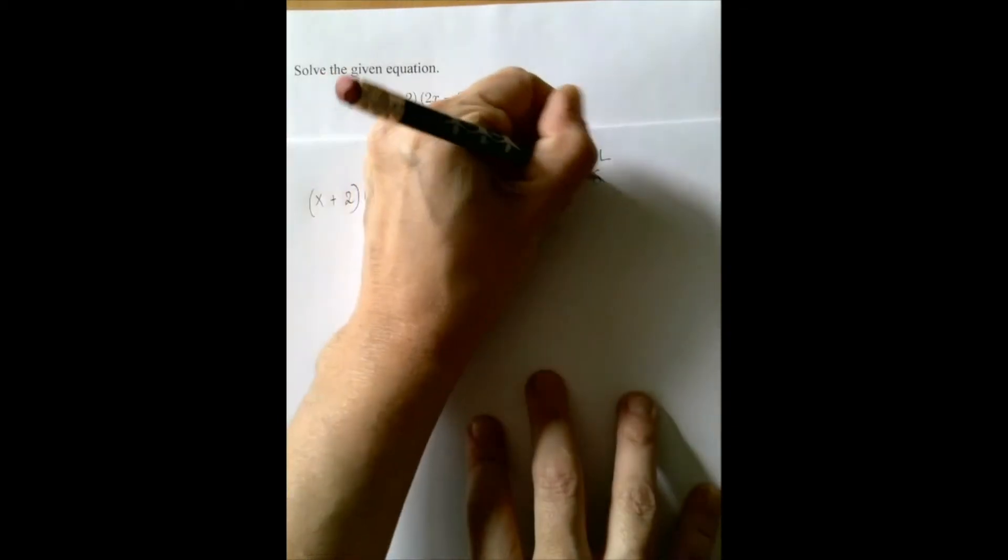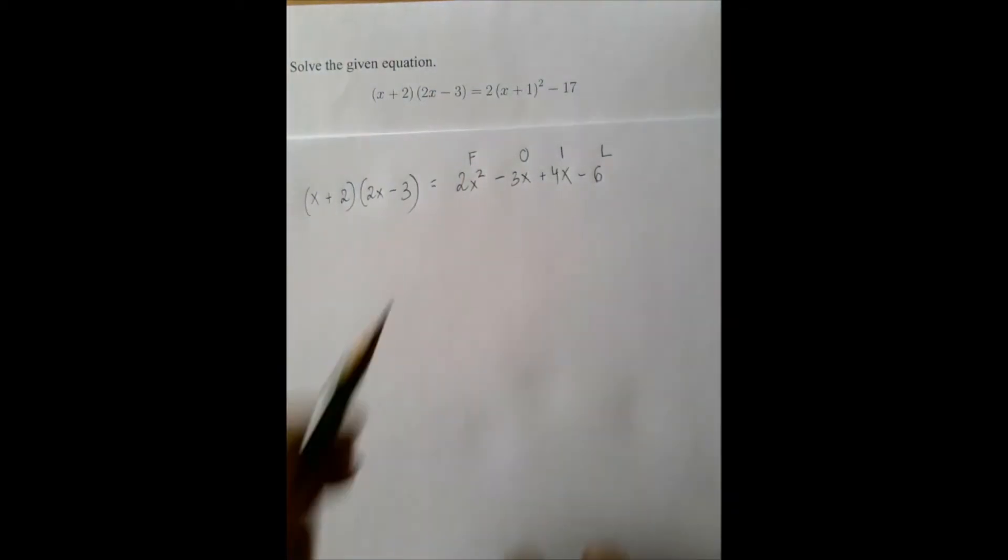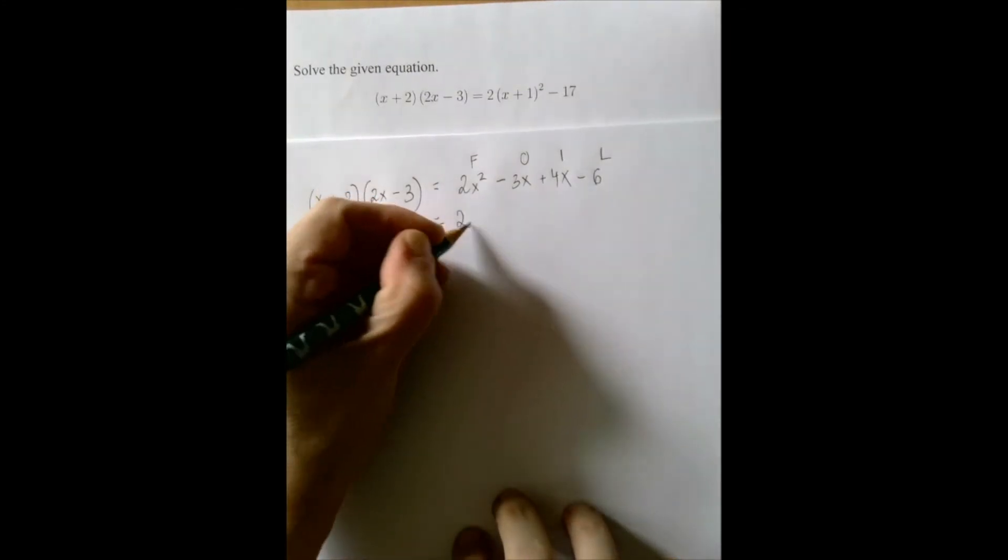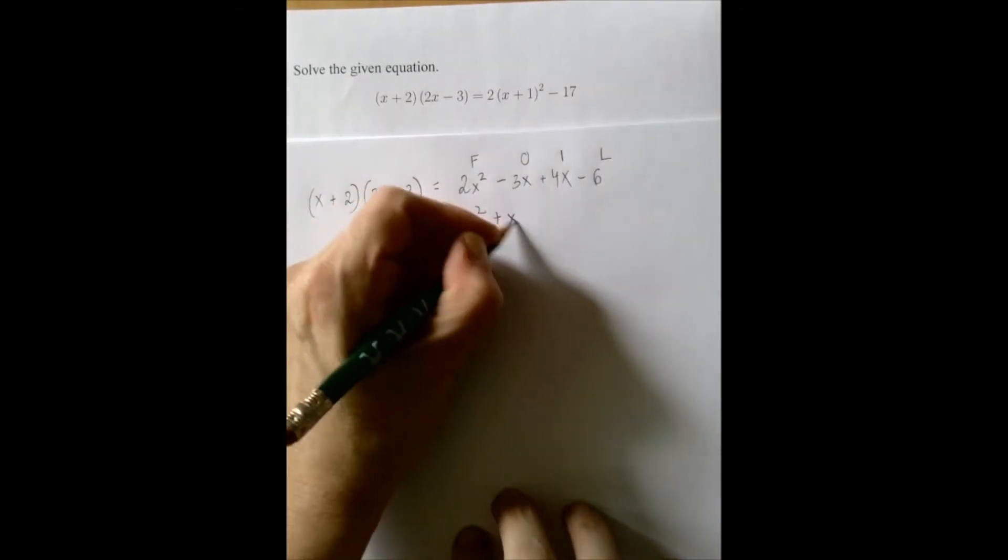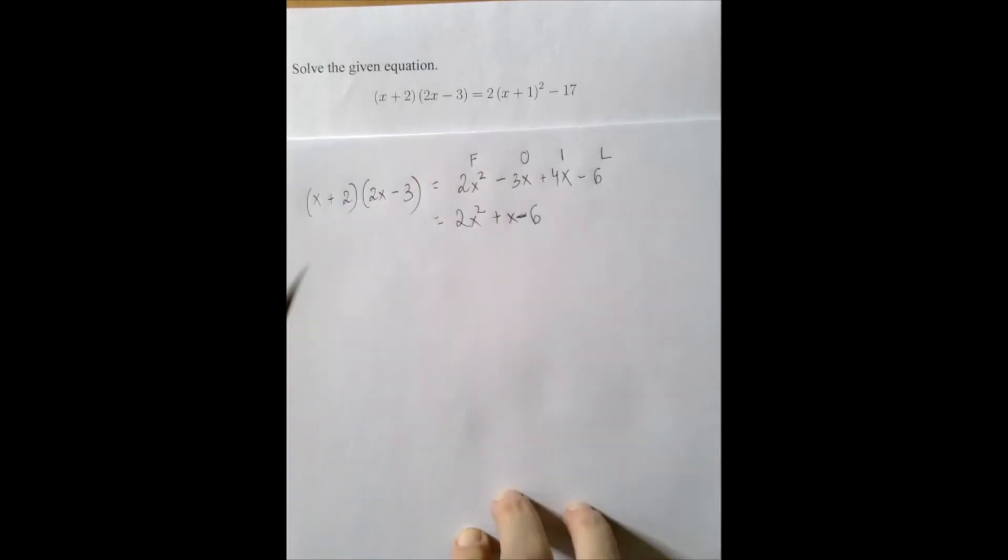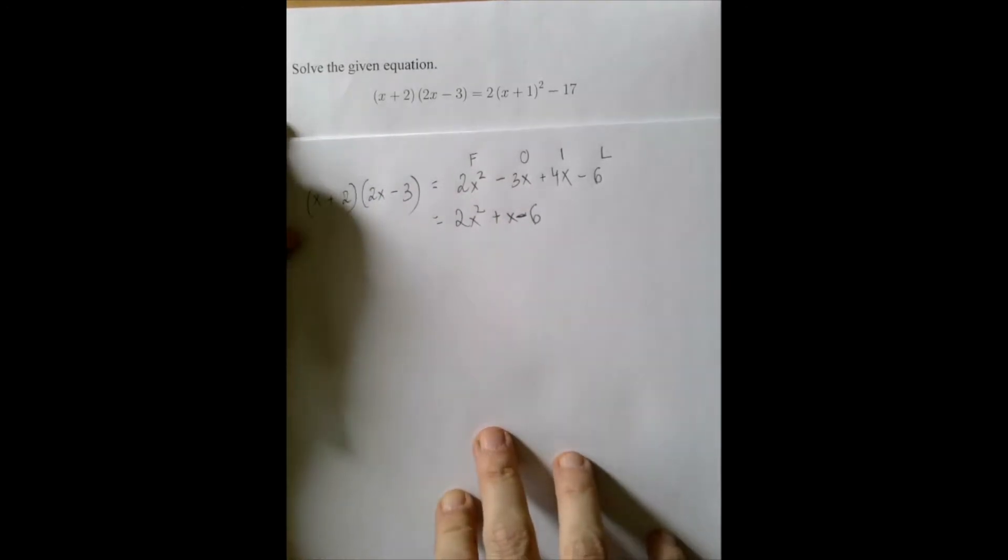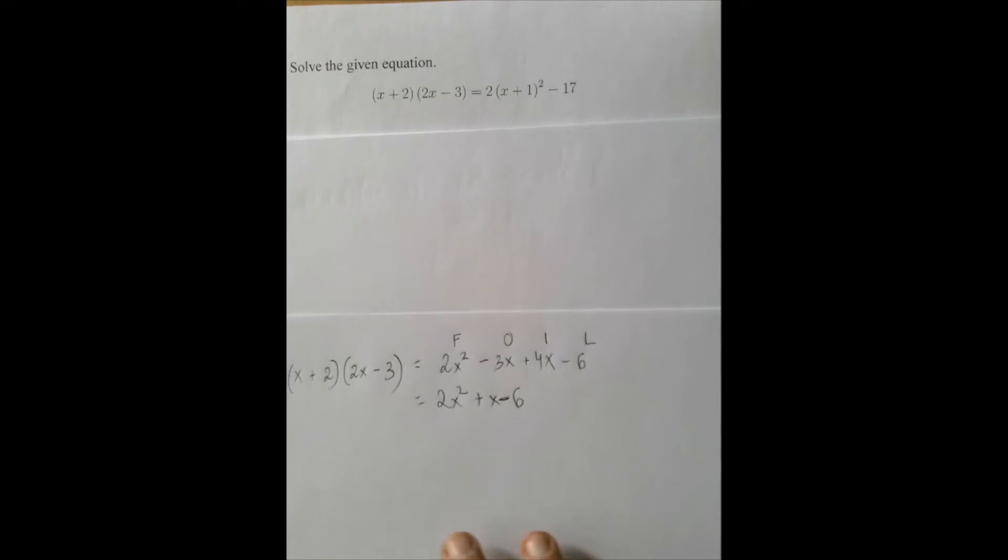And L is for the last with the last. And then we can combine like terms. So we get 2x squared plus x minus 6. Eventually, we're going to be able to do this in our head mentally, so we will not need any writing.